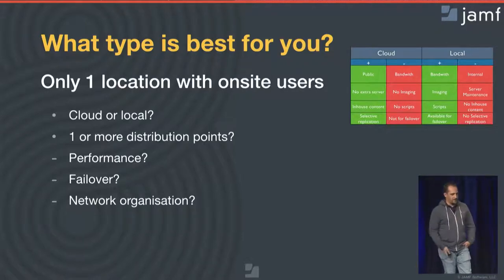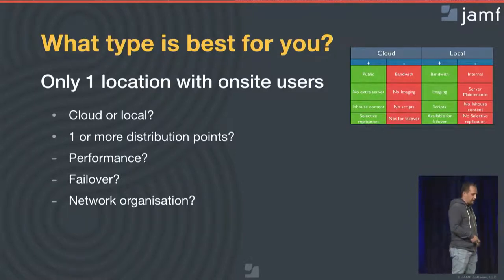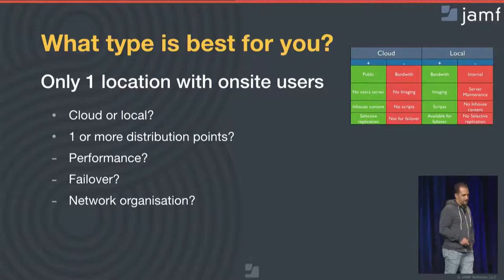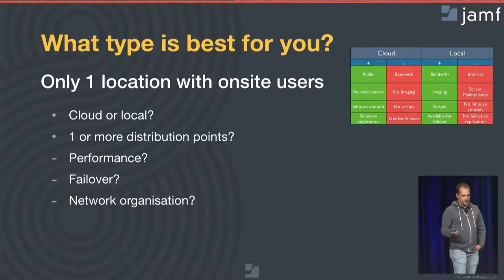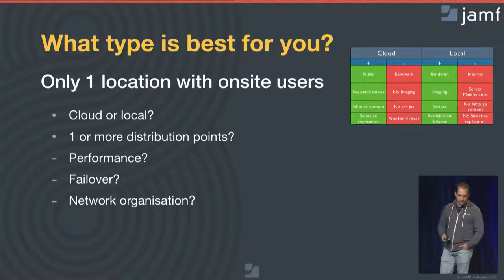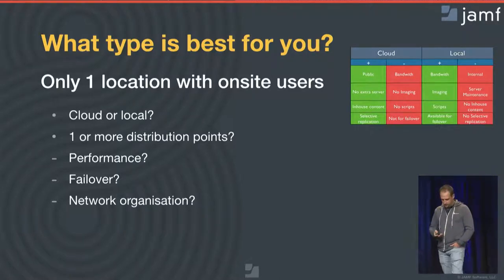Depending on the amount of devices and the frequency at which they're going to download large packages, you might want extra distribution points to spread the load on your servers and give end users a good experience across the deployment of your policies. Consider also having additional file share distribution points in case something happens — everything falls down to how your network is organized. One distribution point per subnet, maybe some extra for failover. You might end up having multiple distribution points, even a combination of cloud and local.